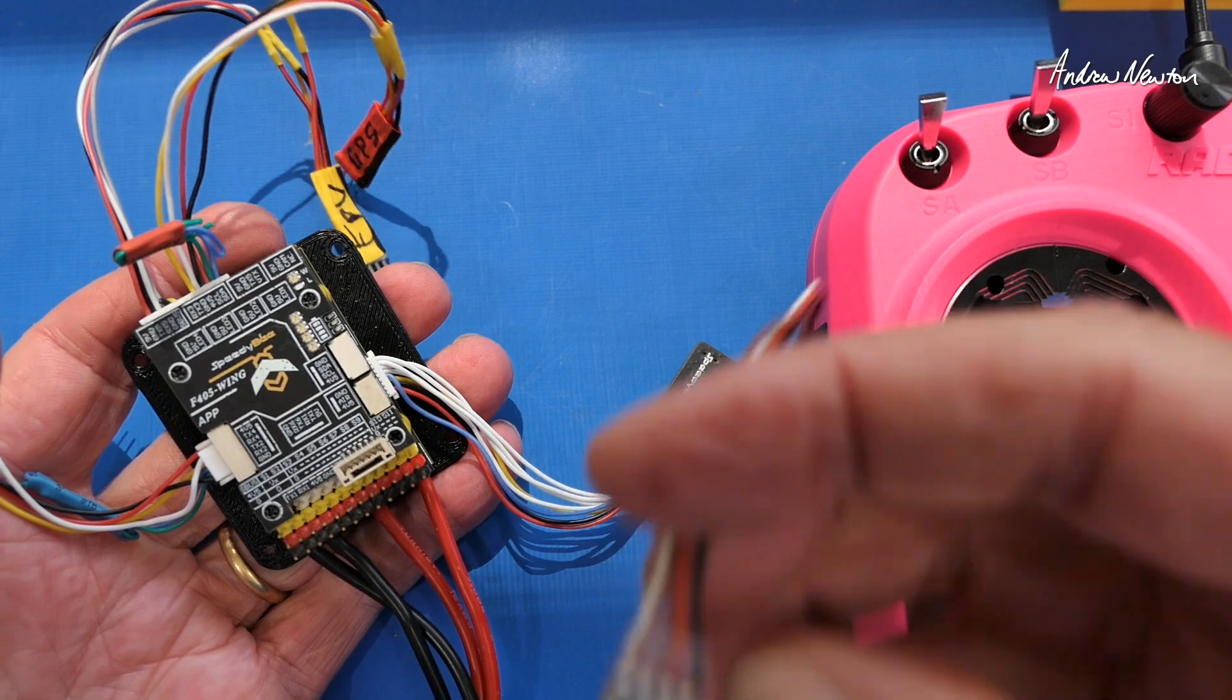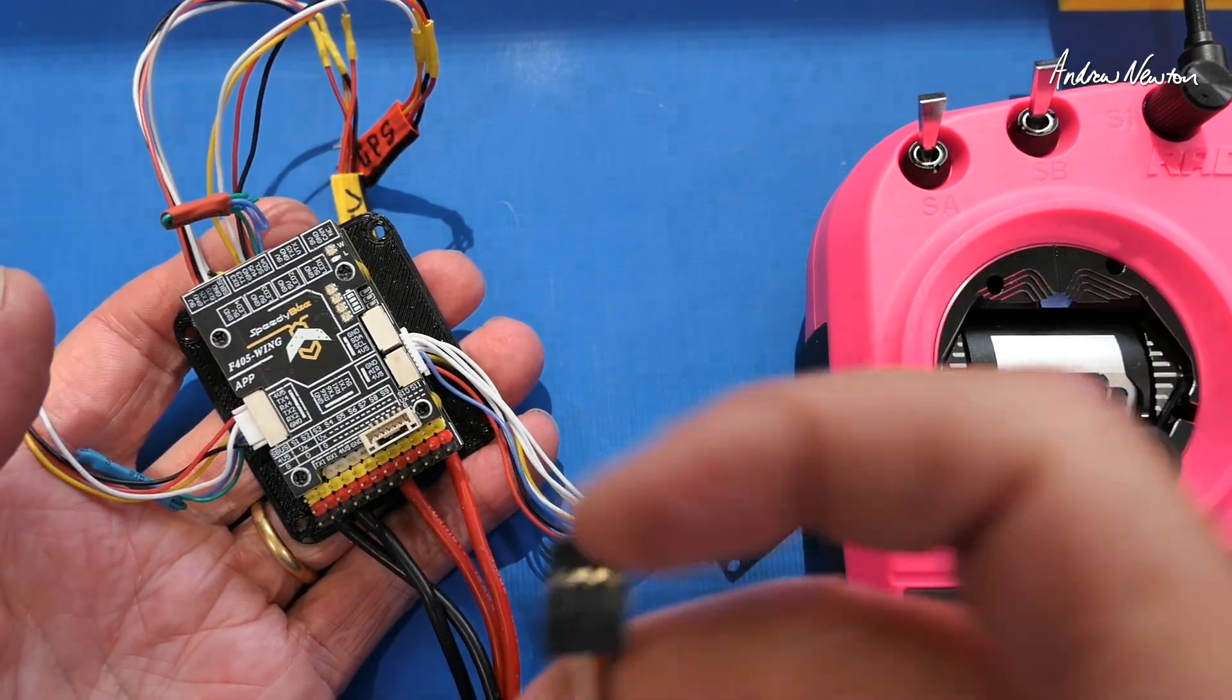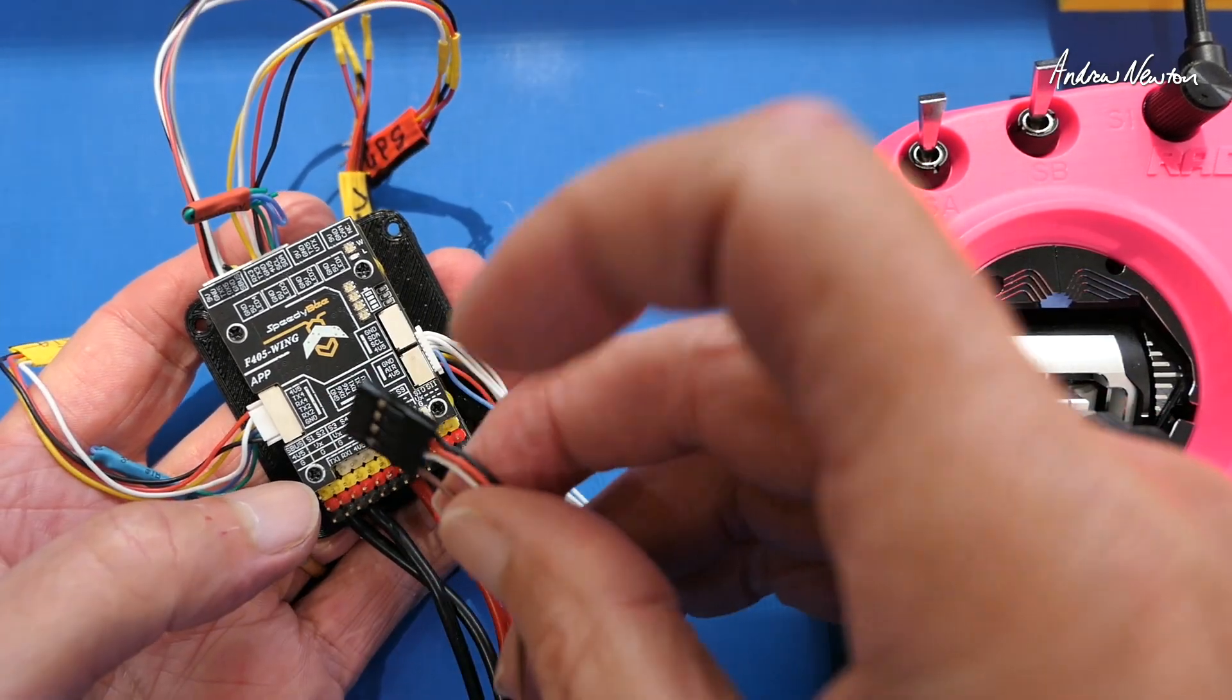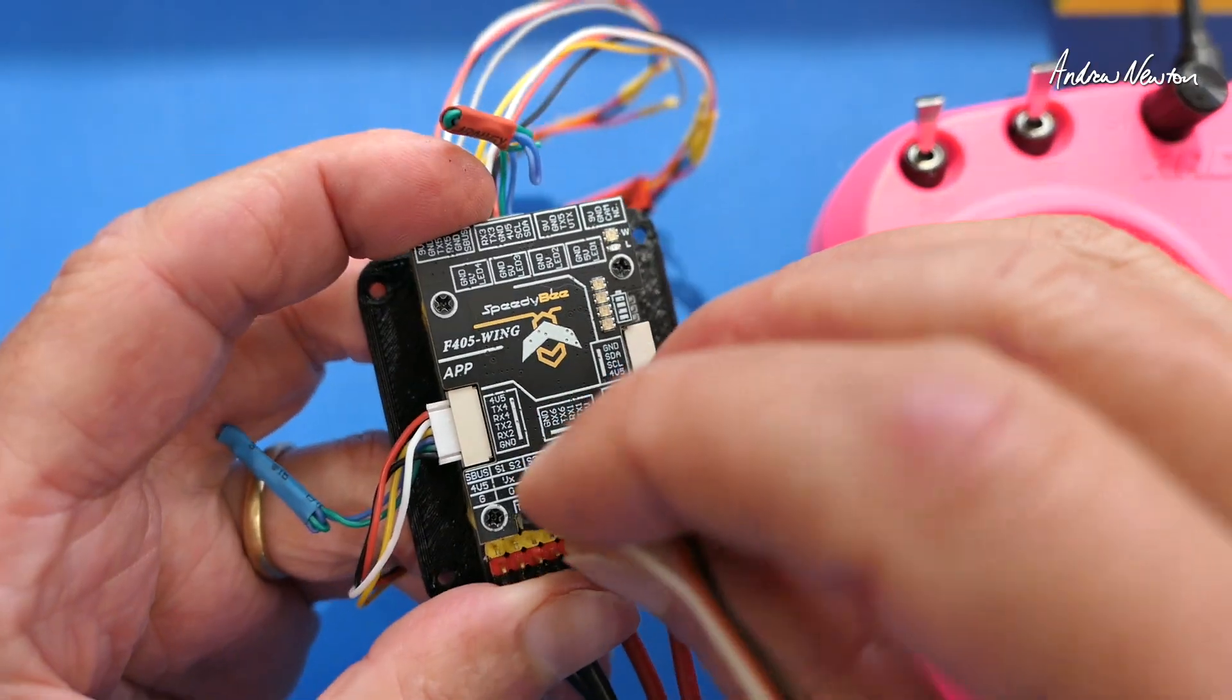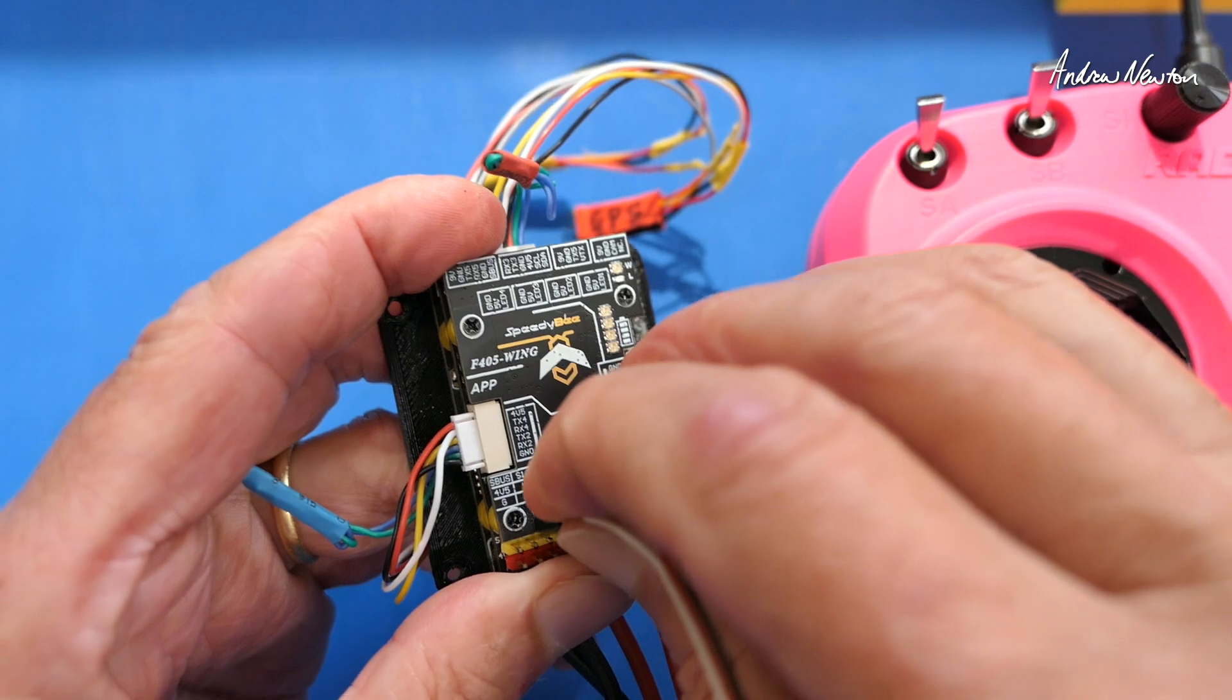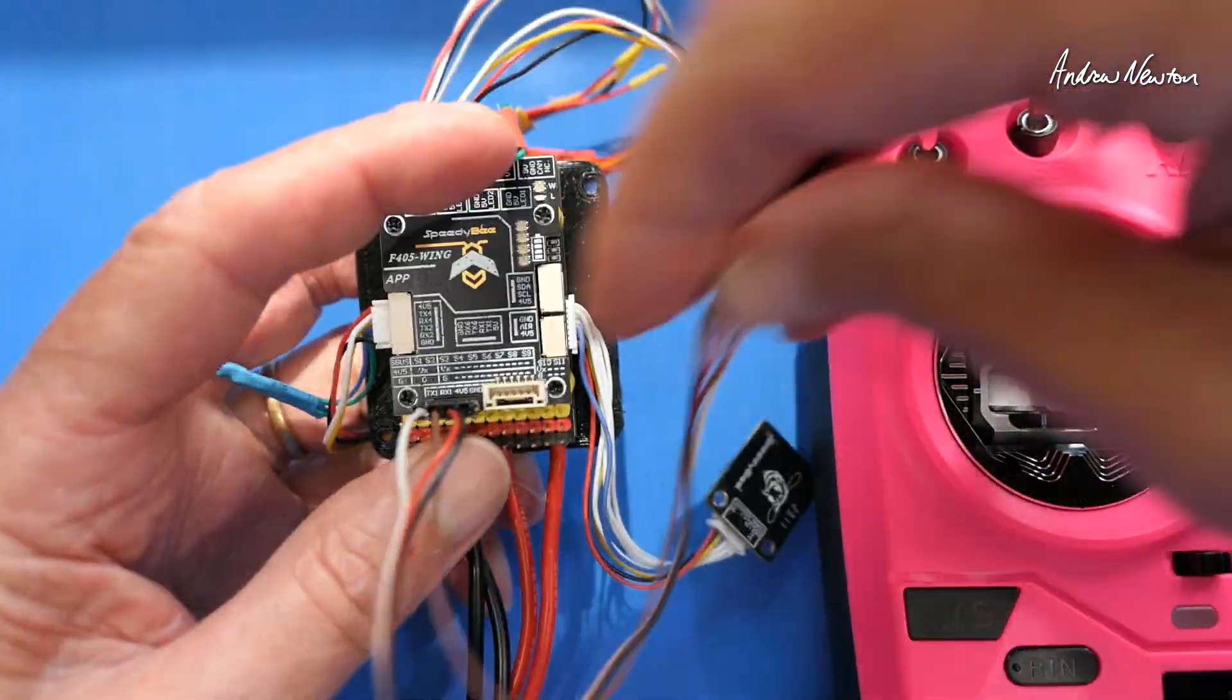Now, of course, it's perfectly suited to be used on the SpeedyBee F405 wing flight control board. You would plug it into UART1. RX to TX and TX to RX, of course, with all of these UART connections. It just clicks in there like that.